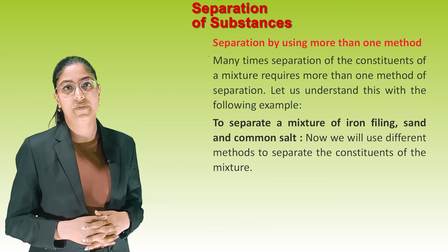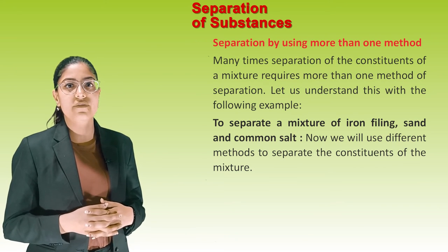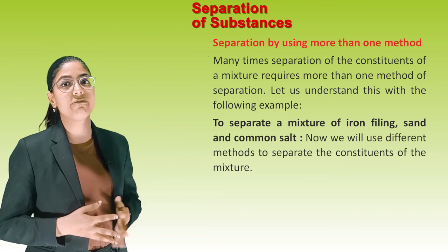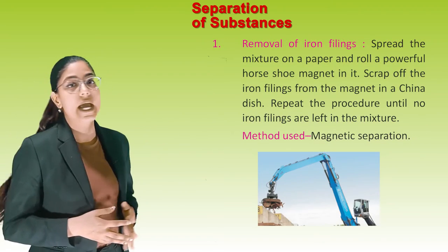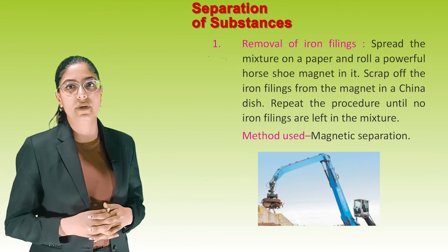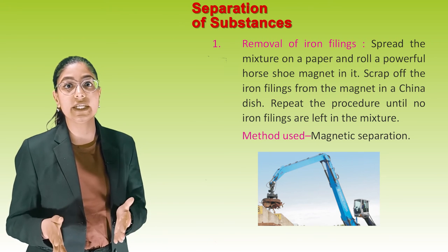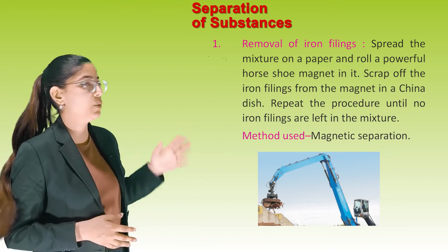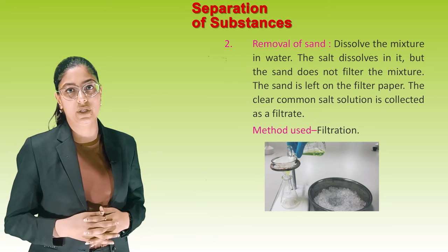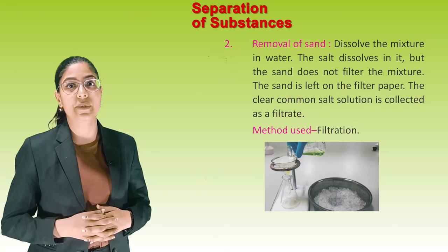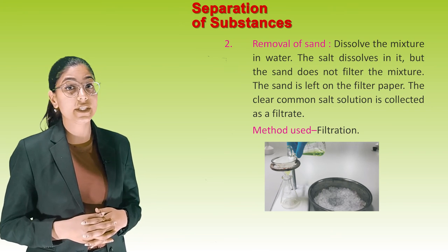Separation using more than one method: Many times, separating constituents of a mixture requires more than one method. For example, to separate a mixture of iron filings, sand, and common salt: first, removal of iron filings — spread the mixture on paper and roll a powerful horseshoe magnet through it, scraping off the iron filings into a china dish. Repeat until no iron filings remain. Method used: magnetic separation. Second, removal of sand — dissolve the remaining mixture in water. Salt dissolves but sand does not. Filter the mixture; the sand is retained on the filter paper and the common salt solution is collected as the filtrate. Method used: filtration.